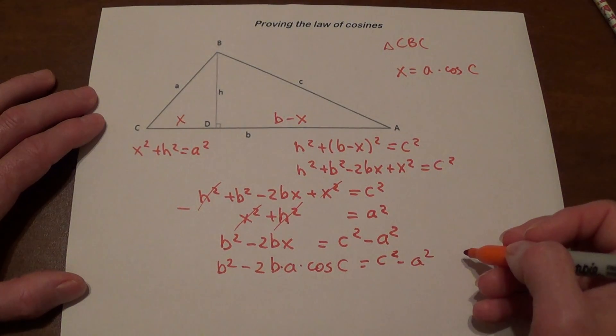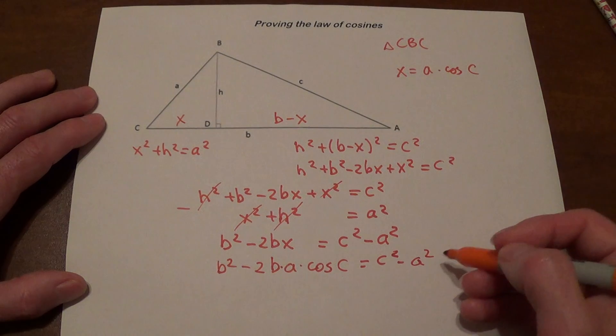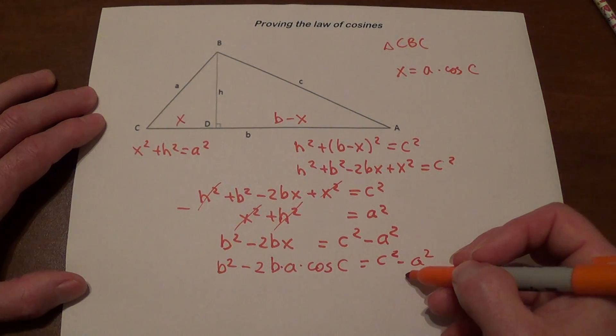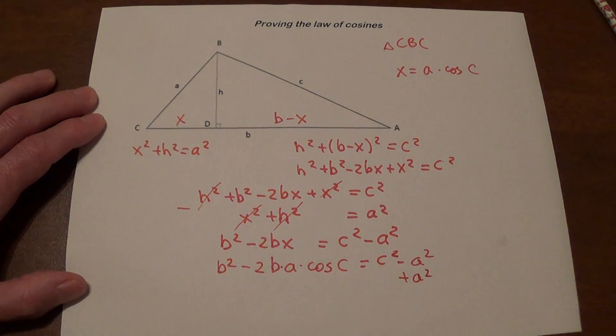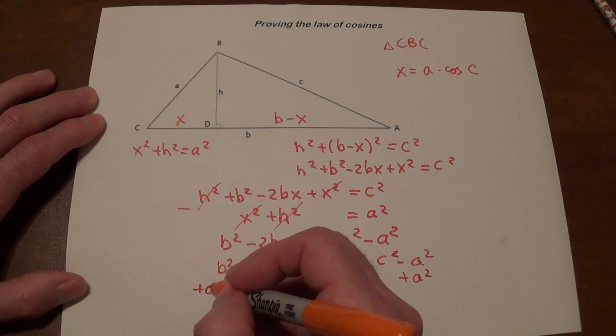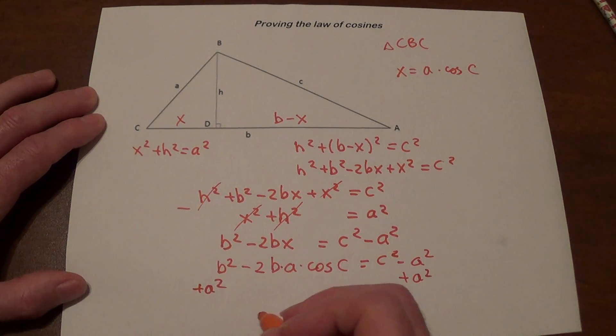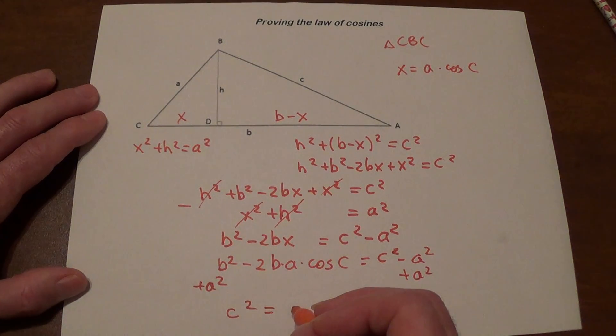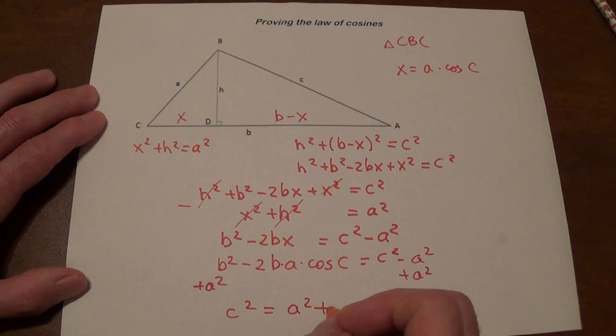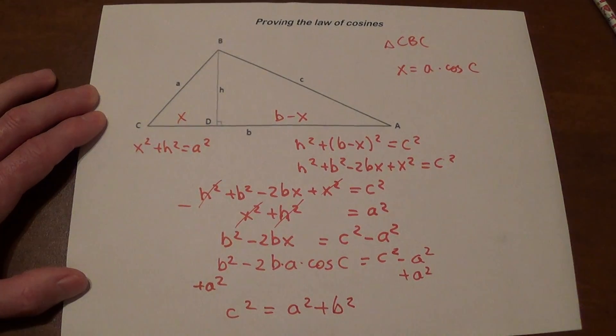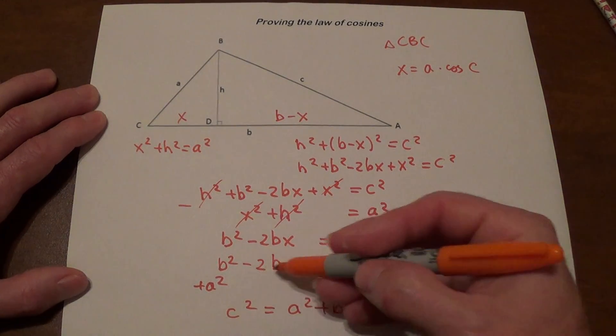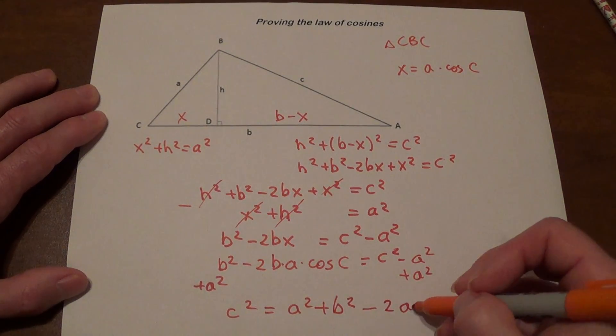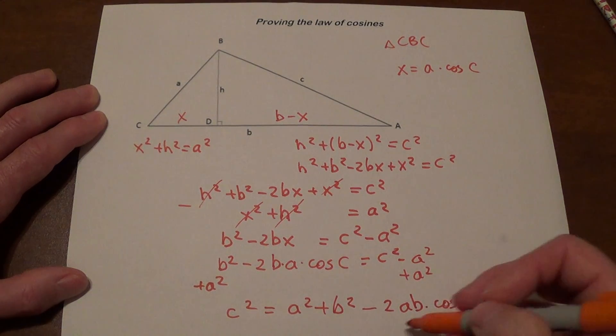All we need to do now is reorganize the terms. Basically what we do is add a squared on both sides, and we get the following expression: c squared equals a squared plus b squared minus 2ab times cosine c.